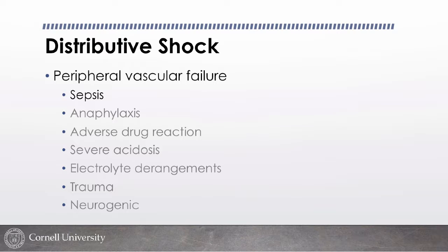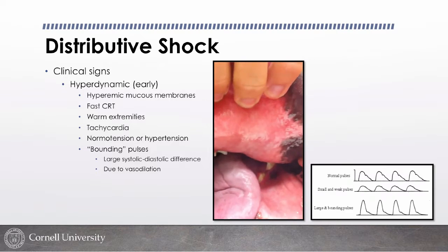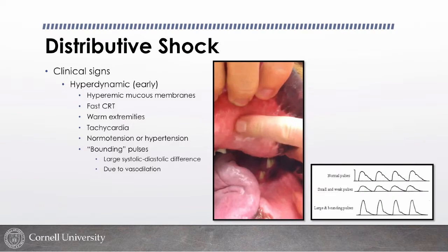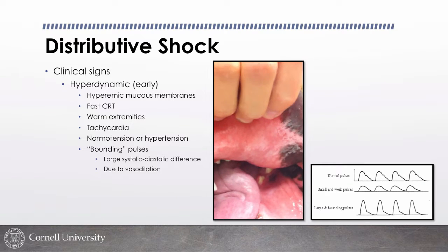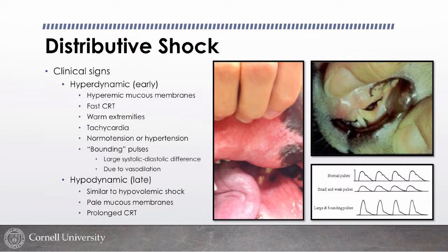Most patients we see in distributive shock have an infectious process affecting them systemically. Distributive shock is very different clinically, especially in dogs: it's hyperdynamic early on — hyperemic mucous membranes, rapid capillary refill time, warm extremities, and stronger-than-normal pulses. The cells are saying they need more oxygen, but the circuit can't constrict. So warm feet and injected membranes are actually inappropriate — that's vasodilation with blood in the wrong beds when it should be at the core.